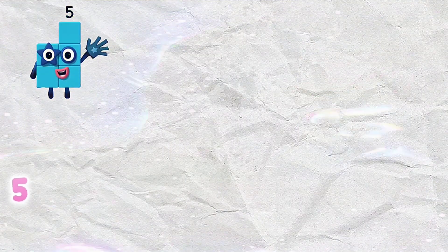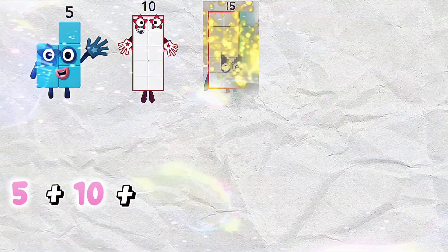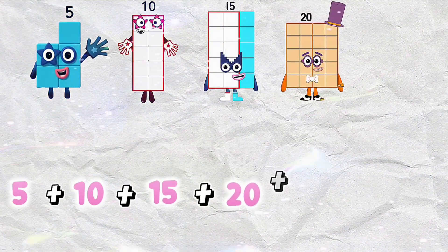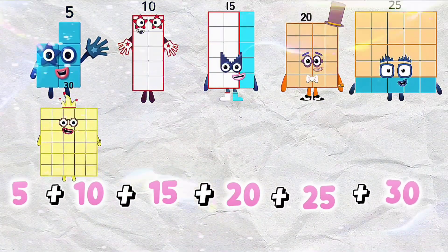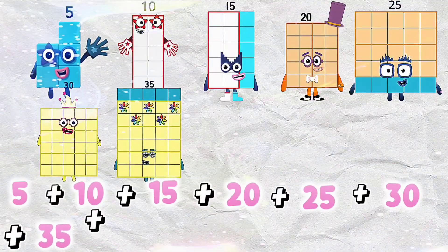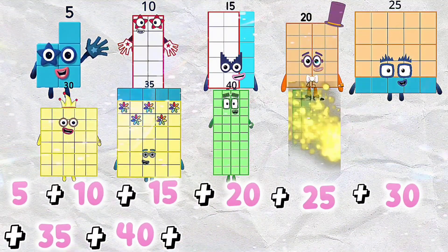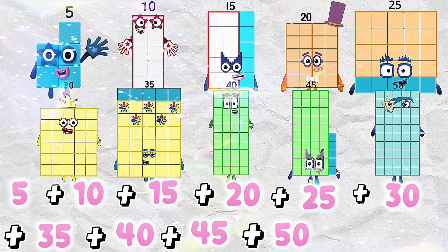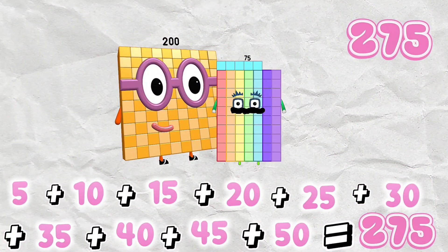5 plus 10 plus 15 plus 20 plus 25 plus 30 plus 35 plus 40 plus 45 plus 50 is equals to 275.